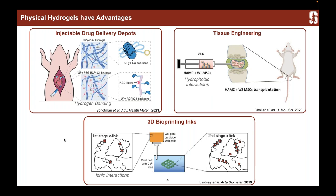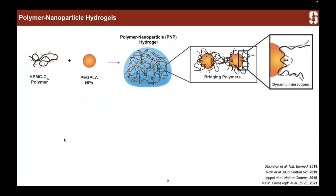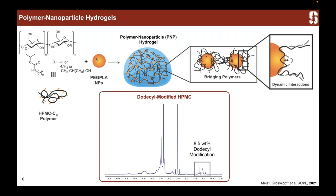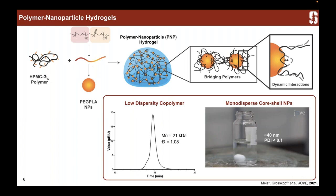In our lab at Stanford, I've really focused on a hydrogel platform that we call polymer nanoparticle hydrogels. These gels are formed through two main components: an HPMC-C12 polymer and PEG-PLA nanoparticles. The HPMC is hydroxypropyl methyl cellulose that we modify through an isocyanate reaction to have a dodecyl chain — basically a carbon chain. We then mix these with polyethylene glycol/polylactic acid nanoparticles polymerized through ring-opening polymerization. We drop the PEG-PLA copolymer into water and it naturally forms core-shell nanoparticles with PLA in the center and a PEG corona around the outside.